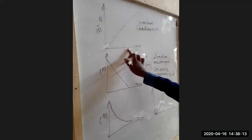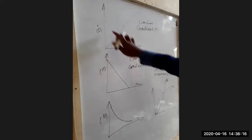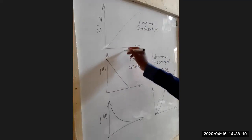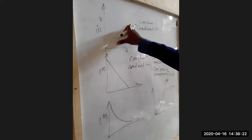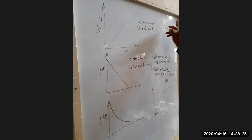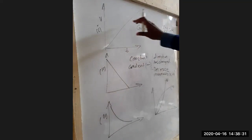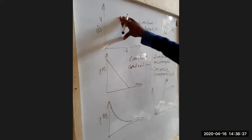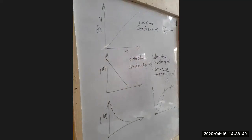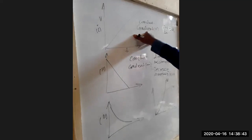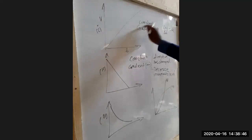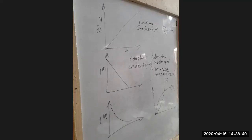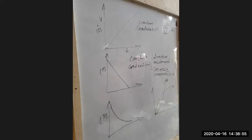For the second case, if it is a velocity-time graph, the gradient will be change in velocity over change in time, and that actually gives us acceleration. Because the gradient is constant, it means acceleration is constant. So we describe that motion as: a body moves with a constant acceleration. So the gradient always guides you when you are describing the type of motion.